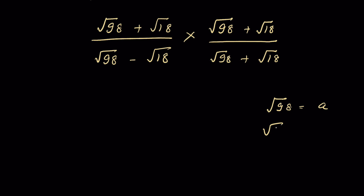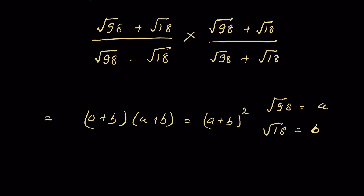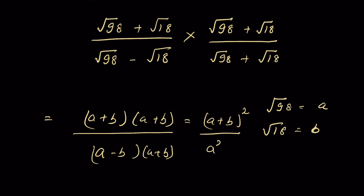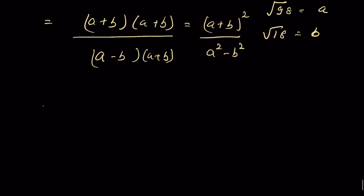Let a = √98 and b = √18. The numerator becomes (a + b)(a + b) = (a + b)², and the denominator becomes (a − b)(a + b), which is a difference of squares equal to a² − b².